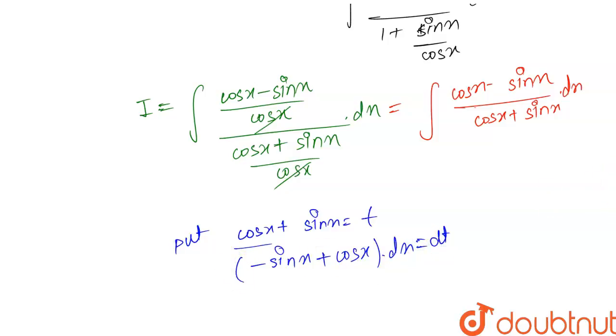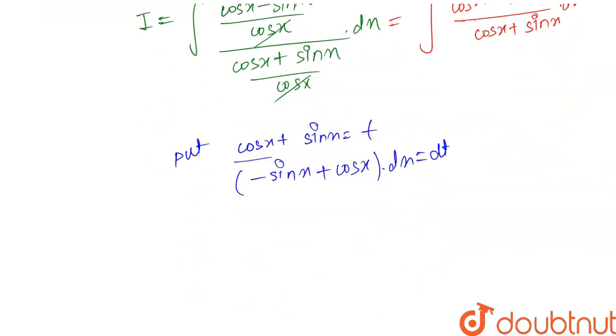So further we can say that cos x minus sin x dot dx is equal to dt. So our i becomes equal to integration of dt.